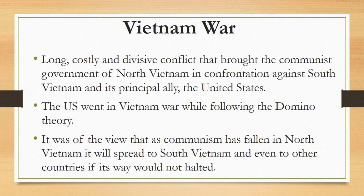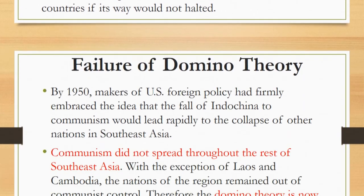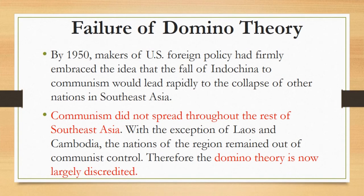The Vietnam War has been covered in detail in another lecture, the link of which is available in the description. Failure of Domino Theory: by 1950, makers of US foreign policy had firmly embraced the idea that the fall of Indochina to communism would lead rapidly to the collapse of other nations in Southeast Asia. They had accepted the concept of the Domino Theory and suggested the US government take measures to stop the spread of communism.